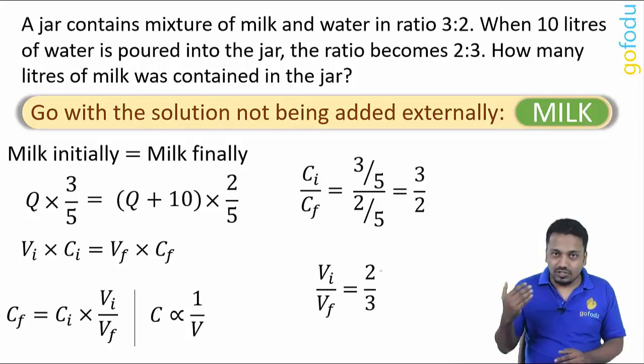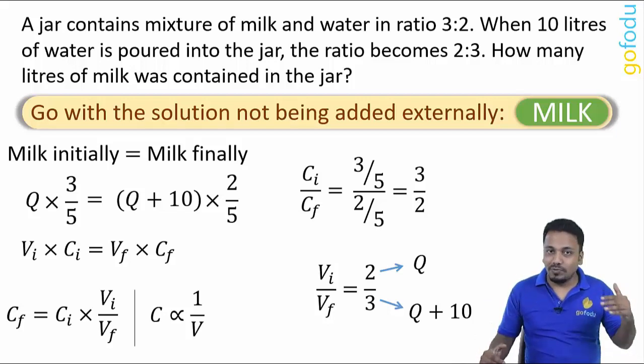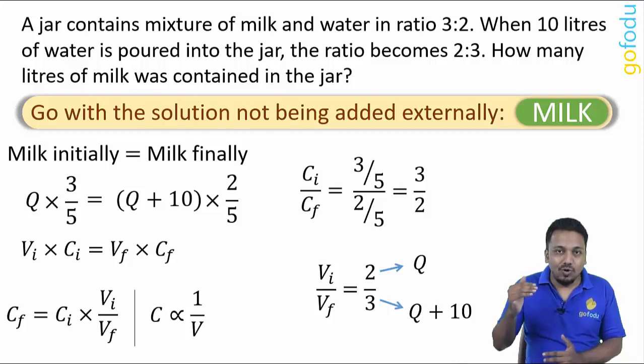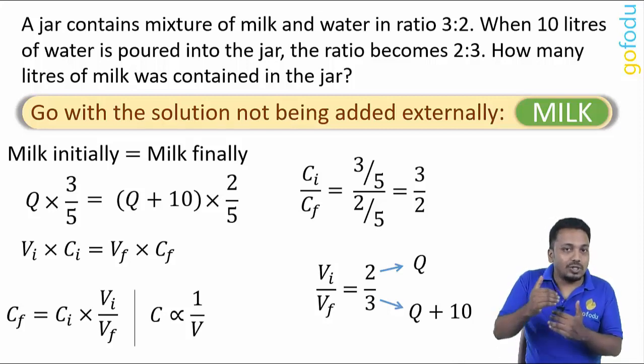Earlier volume was Q. Finally it became Q + 10. So either equate 2/3 to Q/(Q + 10) or in 2:3 on ratio scale, 3 is 1 more than 2.